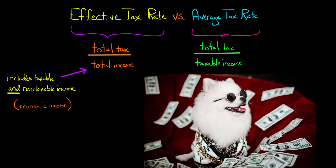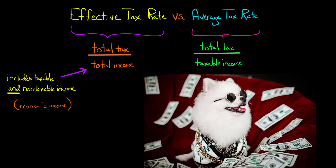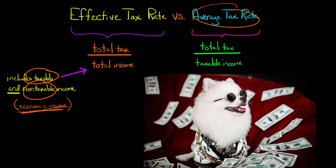In this video I'm going to show you the difference between the effective tax rate and the average tax rate. The effective tax rate is a person or corporation's total tax divided by their total income. Total income is going to include both taxable and non-taxable income, and it's sometimes referred to as their economic income.